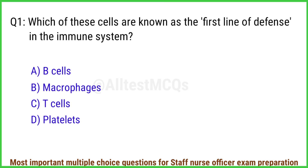Q1. Which of these cells are known as the first line of defense in the immune system? The right answer is option B: Macrophage.